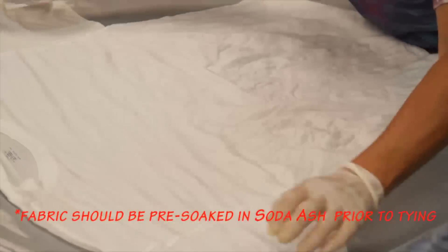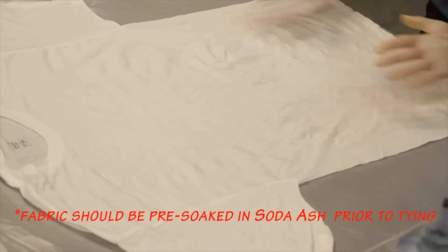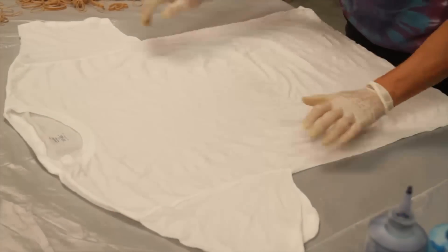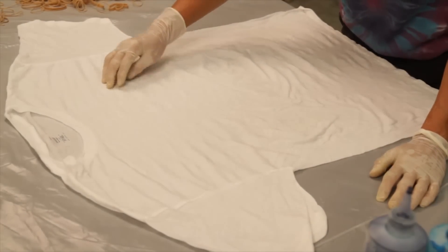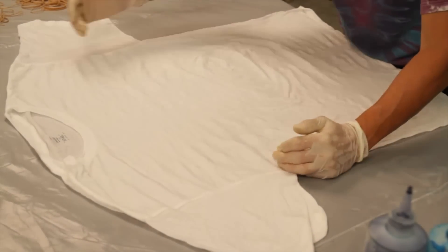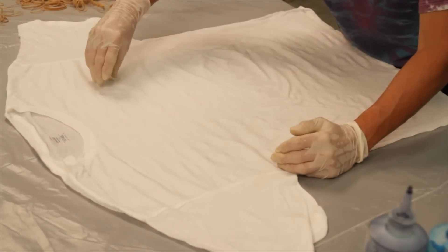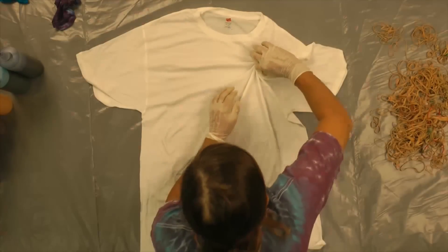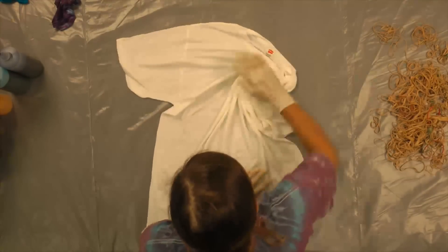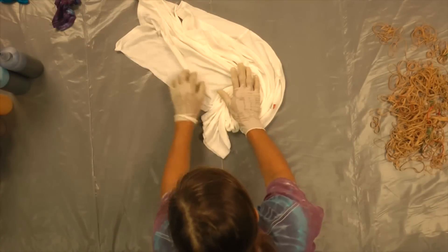So lay your shirt flat. I usually start in this corner up here, about halfway between the shoulder and the armpit, halfway between the center and the sleeve, and the same spiral twist, same feathering.